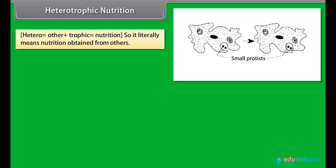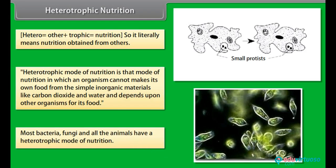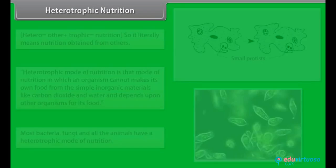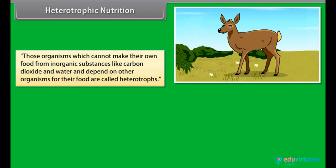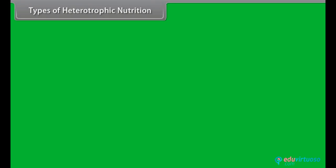Heterotrophic nutrition literally means nutrition obtained from others. Heterotrophic mode of nutrition is that mode in which an organism cannot make its own food from simple inorganic materials like carbon dioxide and water, and depends upon other organisms for its food. Most bacteria, fungi, and all animals have a heterotrophic mode of nutrition. Heterotrophs depend on autotrophs and other heterotrophs for their food.